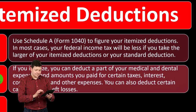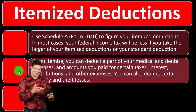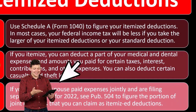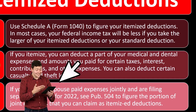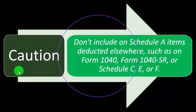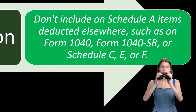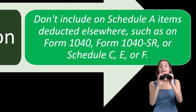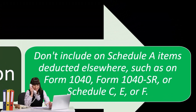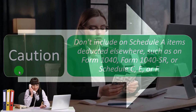If you itemize, you can deduct a portion of medical and dental expenses, certain taxes, interest, contributions, and other expenses — those are the main categories on Schedule A. You can also deduct certain casualty and theft losses. If you and your spouse paid expenses jointly but are filing separate returns for 2022, see Publication 504 to determine the portion of joint expenses each can claim.